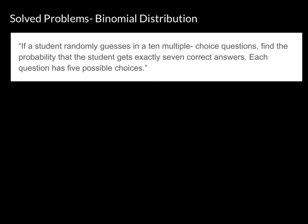So let's take the problem here. If this is given in a test, we have no idea yet whether it falls under a binomial distribution. For those already familiar with the structure, they could easily spot it. Let's read the problem: if a student randomly guesses on a 10-question multiple choice test, find the probability that the student gets exactly seven correct answers, given that each question has five possible choices.